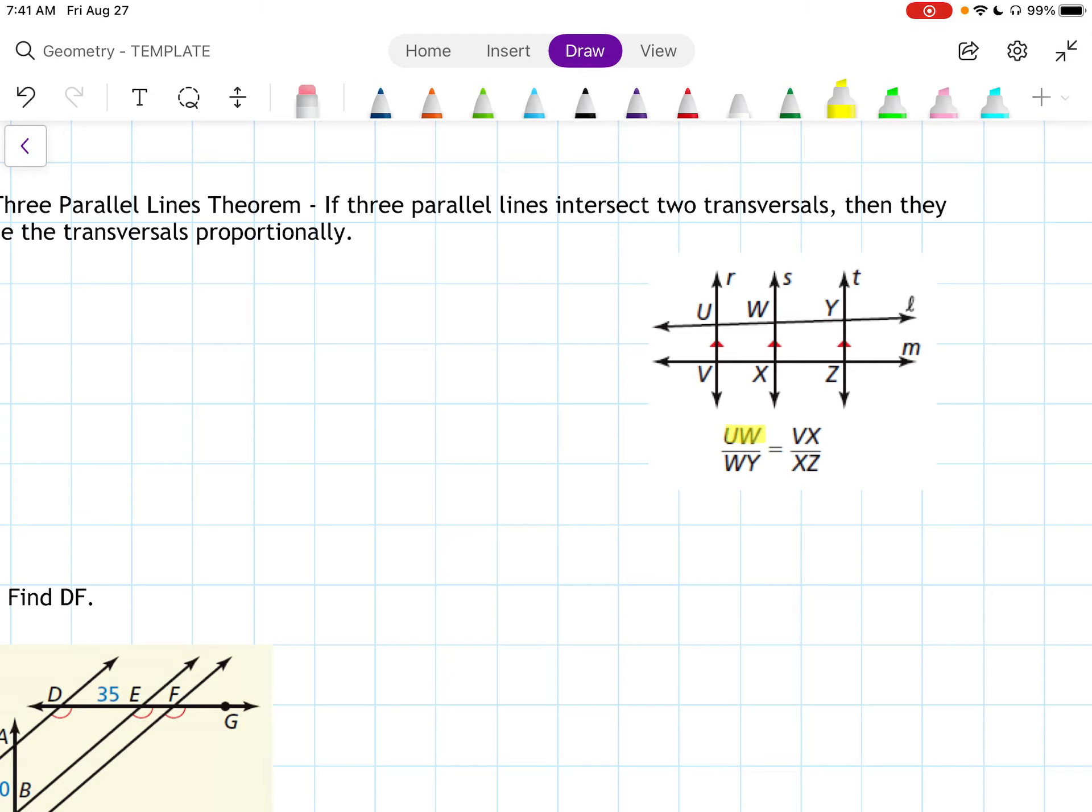So here we have UW is this. WY is this here. And then VX is here. And XZ is there. Okay. So they took from the same transversal, the first piece and then the second piece. Then they go to the other one and they go back to the first and the second.